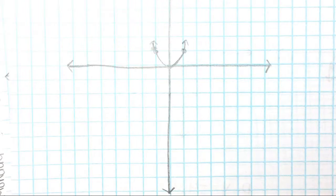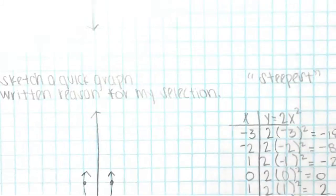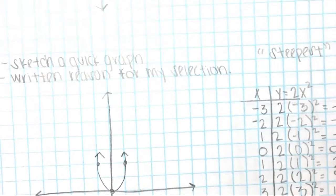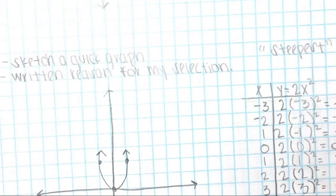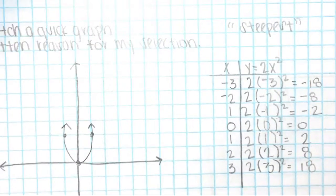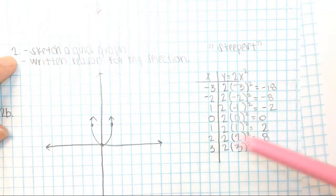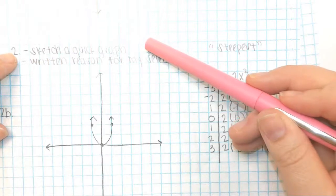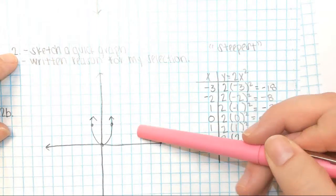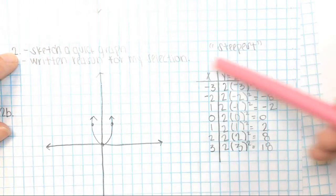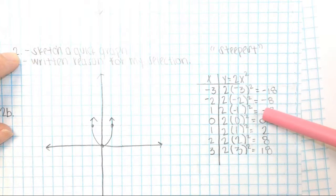On number 2, I knew she was the detailed one. She's gone into detail as to who is the steepest and why. Do you have to put as much detail as she is doing? No, you do not. You can either, she even wrote what I said. So smart. You can either sketch a quick graph. She did that. She also has a table showing her reason for her selection.